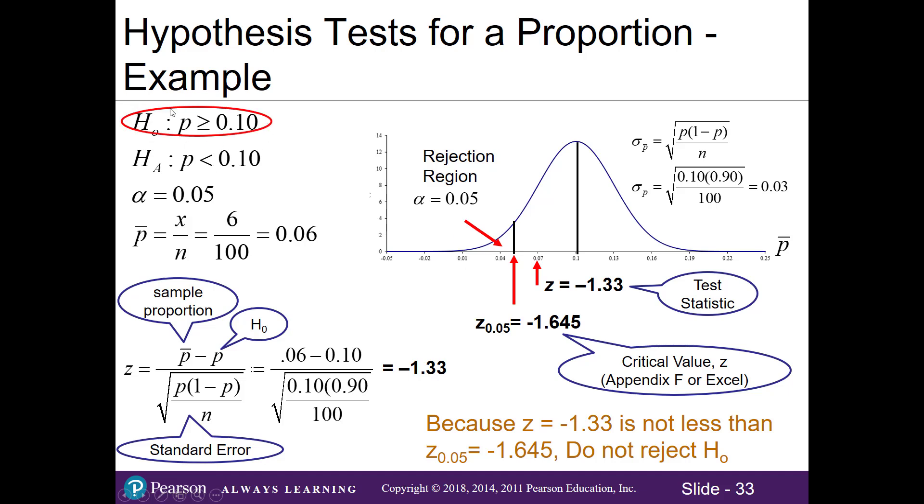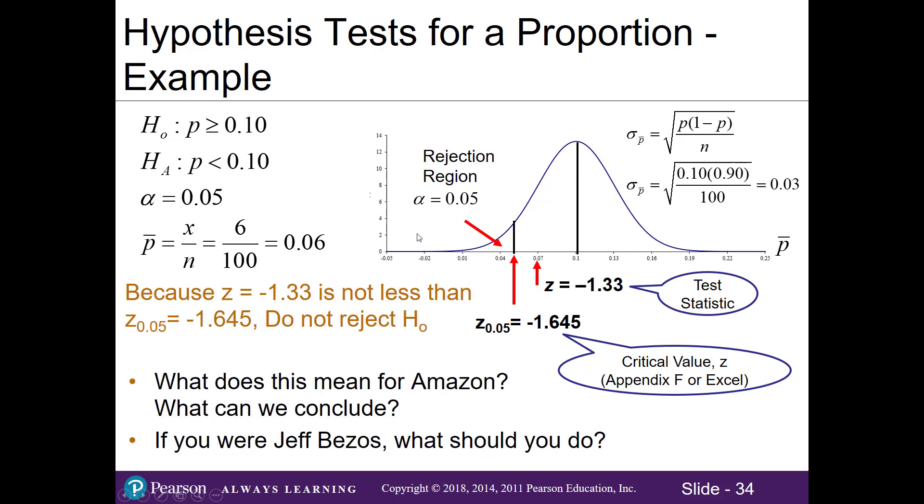In other words, we're going to circle our null hypothesis because we do not reject it. That means this is the accepted statement. But what does that mean for Amazon? Because we did not reject the null, that means I'm keeping the null and we're going to ignore the alternative hypothesis. What does this mean for Amazon, and what can we conclude?